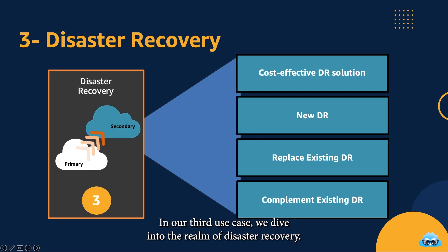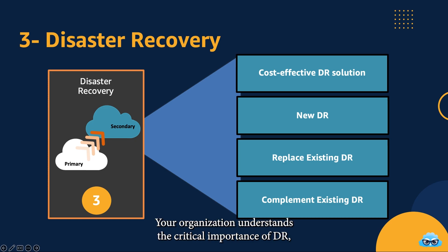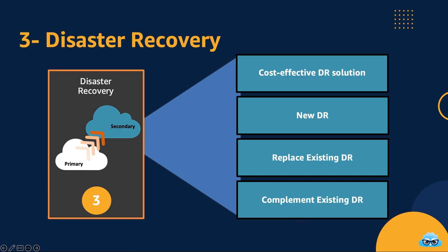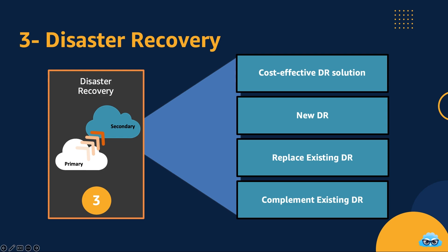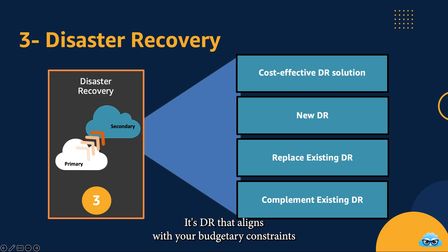In our third use case, we dive into the realm of Disaster Recovery with VMware Cloud on AWS, offering a cost-effective lifeline to businesses facing the unexpected. Consider this scenario: your organization understands the critical importance of DR but may not have the resources or budget for building secondary data centers. VMware Cloud on AWS steps in as a resilient and budget-friendly solution. Cost-Effective DR — VMware Cloud on AWS provides a cost-effective DR strategy. No need to invest heavily in redundant infrastructure or secondary sites. It's DR that aligns with your budgetary constraints.